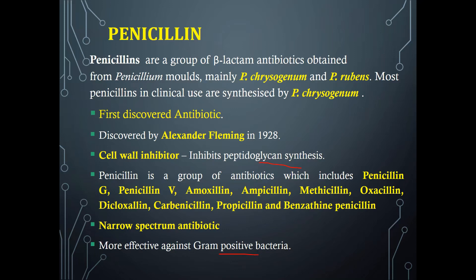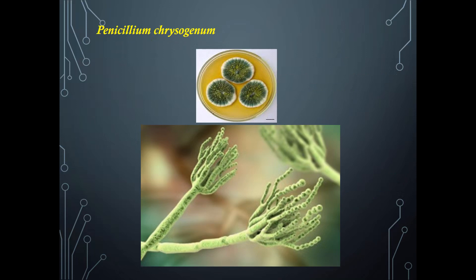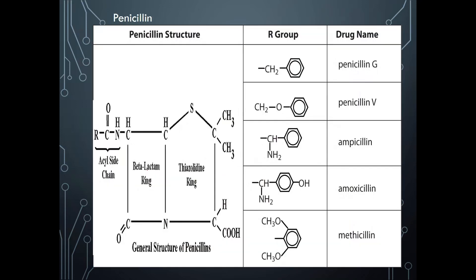Here is the picture and structure of Penicillium chrysogenum. Now take a look at the general structure of penicillin — it contains a beta-lactam ring, a thiazolidine ring, and an acyl side chain. This part is known as the constant region, called six-aminopenicillanic acid. It is a constant region for all kinds of penicillin derivatives, and they only vary in the acyl side chain.